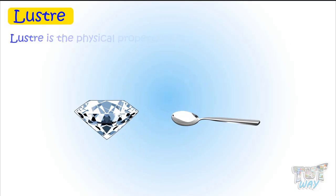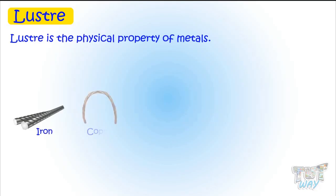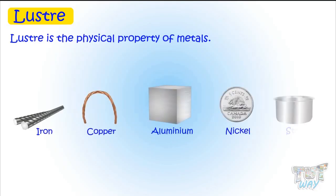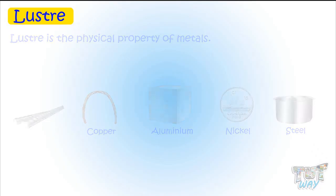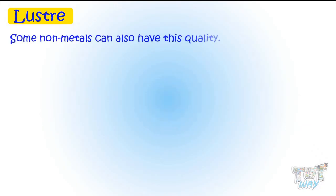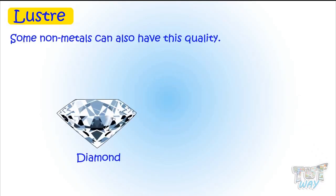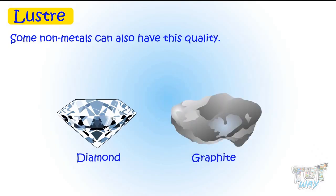Lustre is the physical property of metals, mainly iron, copper, aluminum, nickel, and steel. But non-metals can also have this quality. Light, diamond, and graphite are non-metals but highly lustrous.